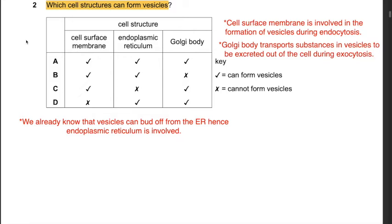Question 2: Which cell structures can form vesicles? The structures given are cell surface membrane, endoplasmic reticulum, and Golgi body. The cell surface membrane is involved in forming vesicles during endocytosis - the process by which cells take in substances by engulfing them into a vesicle. The Golgi body transports substances in vesicles during exocytosis. Vesicles can also bud off from the endoplasmic reticulum. Hence all three can form vesicles, and the answer is A.